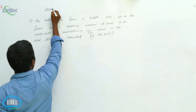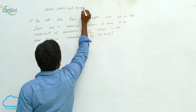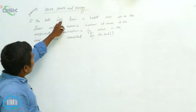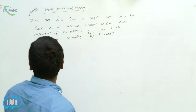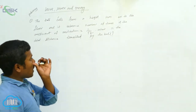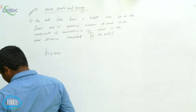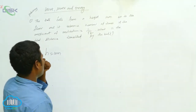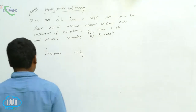Work, power, and energy problem. The ball falls from a height of 10 meters onto the floor and rebounds. The coefficient of restitution is 1 by root 2. What is the total distance traveled by the ball? Given data: h = 10 meters, e = 1 by root 2. Find total distance D.